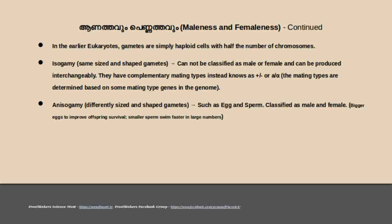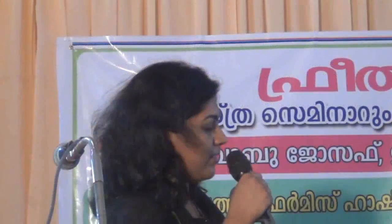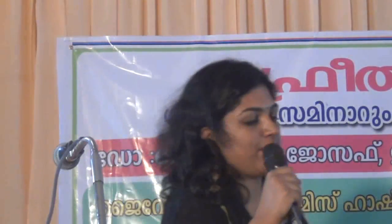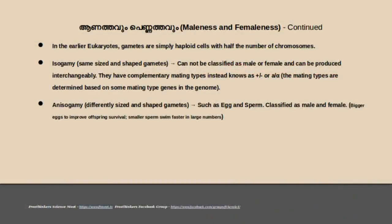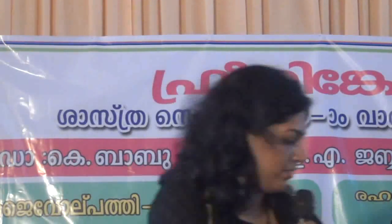What is the evolutionary advantage of egg size? The large egg size benefits offspring survival — it is an energy store and favors female bodies. Smaller sperms can swim faster. If they swim toward the egg, they can fertilize more efficiently.